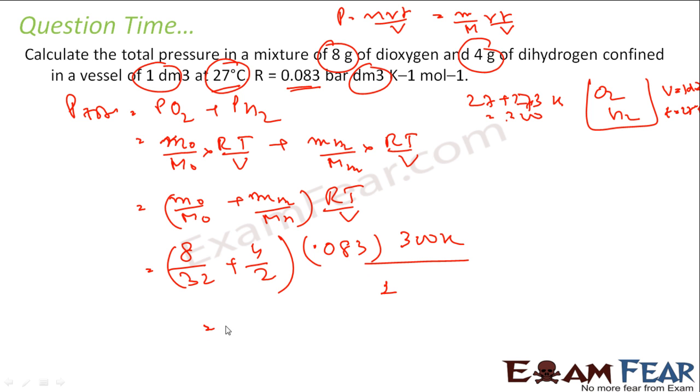So if you solve this you get 6.025 and the unit will be what? It will be bar. The pressure will be in bar because the R decides which unit it will have. Correct? That's it.